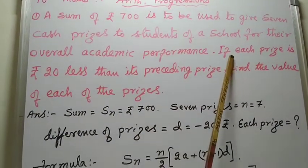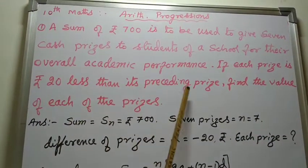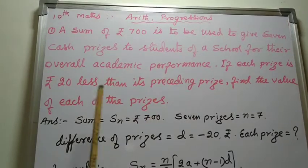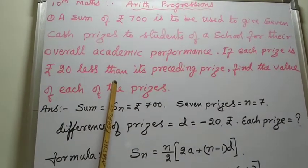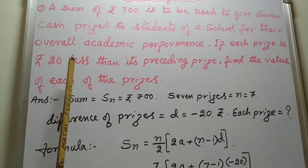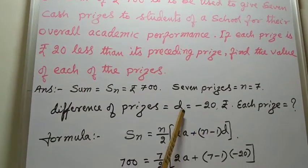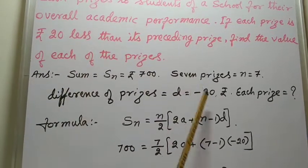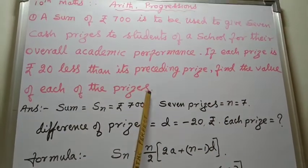And then each prize is Rs. 20 less than its preceding prize. That means it is an AP problem. The difference between two prizes is 20 less. That means first prize and the second prize difference is Rs. 20. That means A2 minus A1 equal to minus 20, so d equal to minus 20 because less, so minus 20.